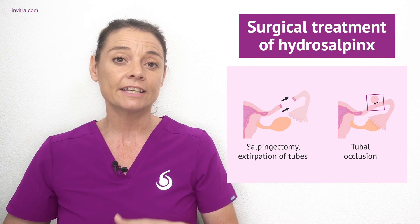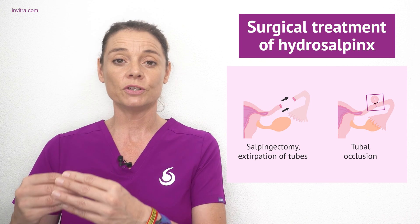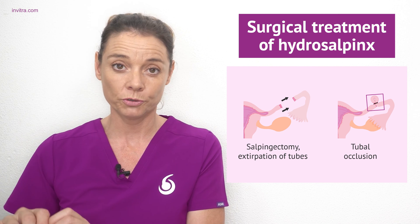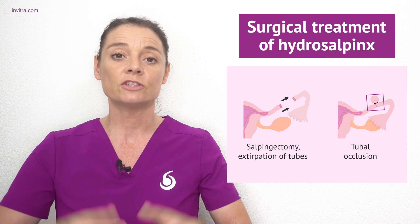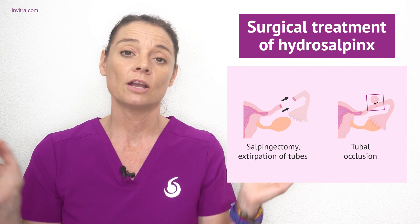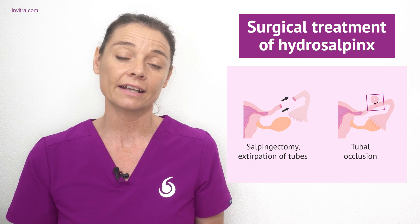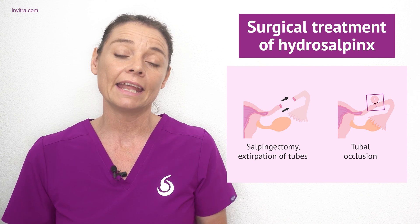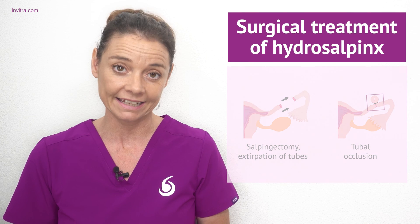An alternative to salpingectomy is tubal occlusion, whereby the surgeon uses a special device to block the tube off. The aim of these surgical interventions is to prevent the liquid in the hydrosalpinx from reaching the uterus, as this can affect the chances of embryo implantation in any assisted reproduction techniques.